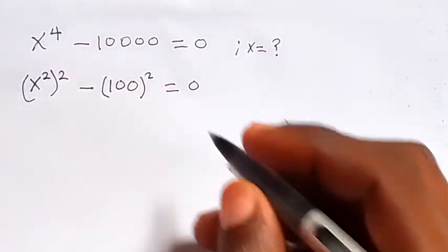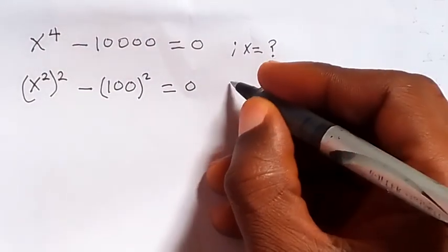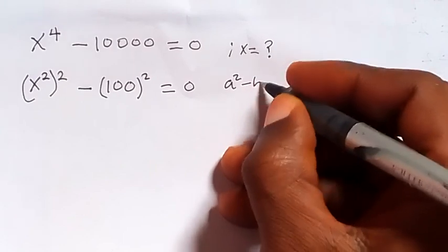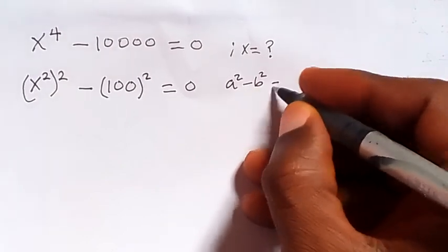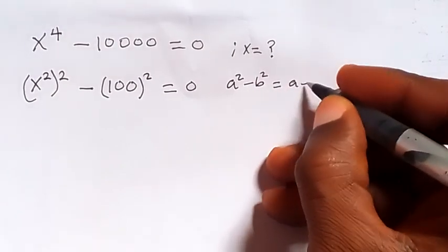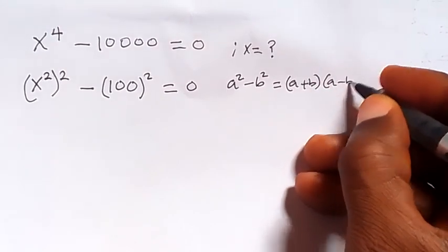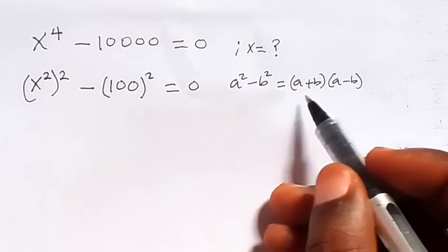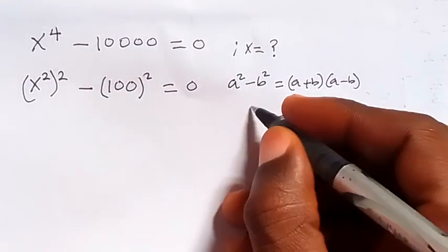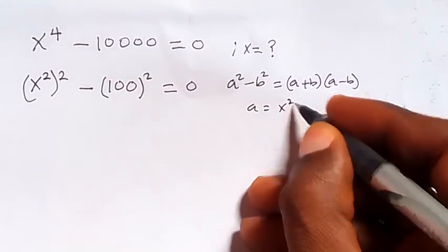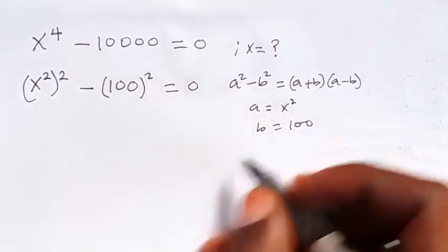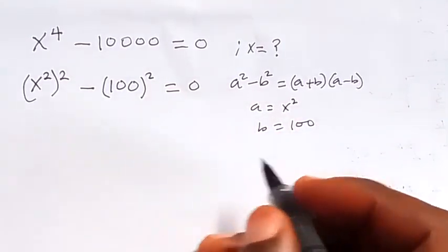Now applying the difference of two squares identity: a squared minus b squared equals a plus b multiplied by a minus b. From here, a is x squared and b is 100, so when we use that...